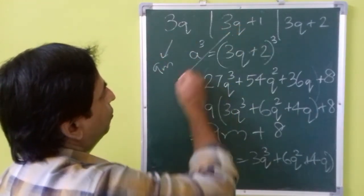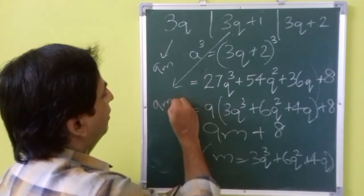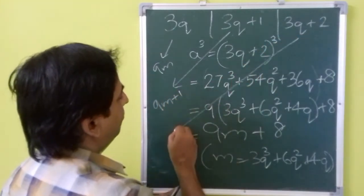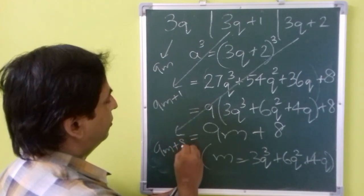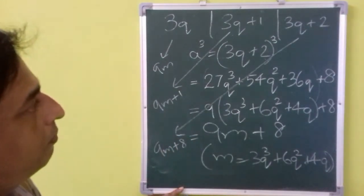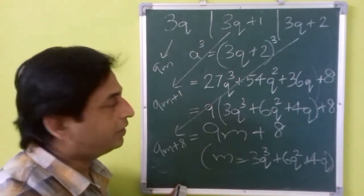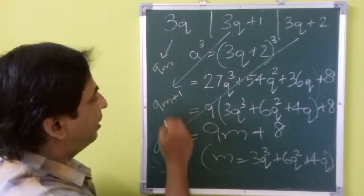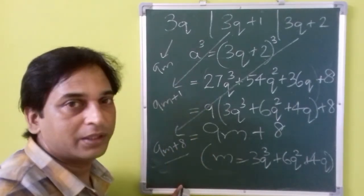So the cube of every positive integer is of the form 9m, 9m plus 1, or 9m plus 8.